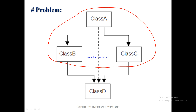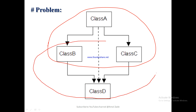Class B gives its properties to class D, and at the same time class C also gives its properties to class D. So there are multiple base classes and a single derived class — this kind of inheritance is called multiple inheritance. When we have this combination of inheritance, there may be a problem.